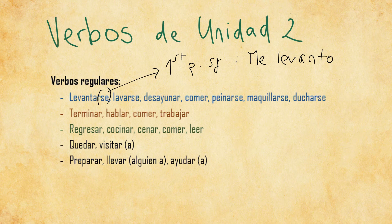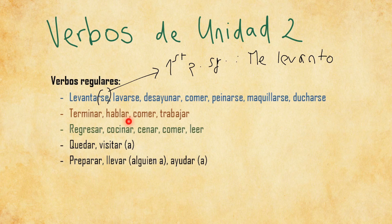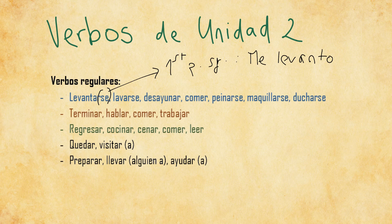So TERMINAR was to end or finish; HABLAR was to talk or to speak; COMER again to eat; and TRABAJAR to work. Moving to the third part — activities of the afternoon and evening: REGRESAR means to come back or get back; COCINAR means to cook; CENAR means to eat dinner or have dinner; COMER again is just to eat generally; and LEER is to read. We had examples like leer un libro — to read a book — or leer el periódico — to read the newspaper.